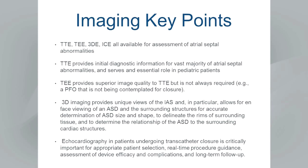Transesophageal echo provides even better image quality than transthoracic, but it's not always required — for example, if you have a patient with a PFO that you're not contemplating surgical or percutaneous closure, you may not need TEE. 3D imaging provides a unique on-foss view of an atrial septal defect, allowing you to accurately determine size, shape, rims of surrounding tissue, and the relationship to surrounding cardiac structures — critically important for percutaneous transcatheter closure.